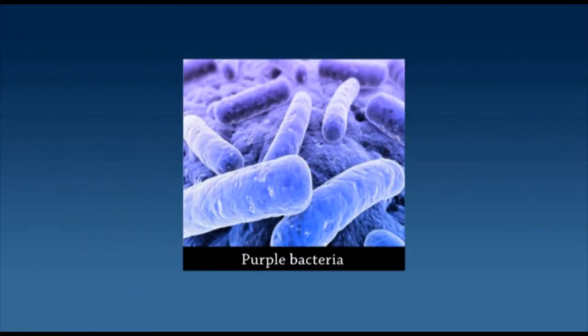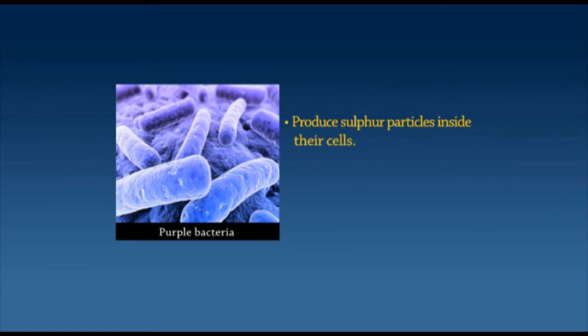Purple bacteria produce sulfur particles inside their cells and are found in either stagnant water or hot sulfuric springs. Instead of using water as a source of electrons like in plants and cyanobacteria, purple sulfur bacteria use hydrogen sulfide as their reducing agent, and because of this they give off sulfur rather than oxygen. Purple non-sulfur bacteria do not release sulfur because instead of using hydrogen sulfide as their reducing agent, they use hydrogen.